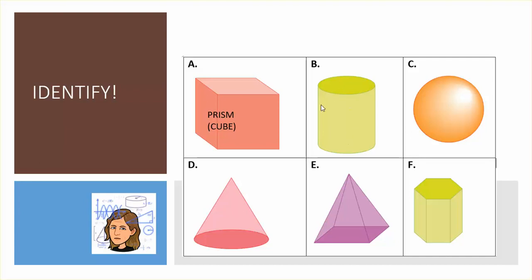B looks like a can. My top and bottom are circles. So when I have circular bases, two of them, that's a cylinder.